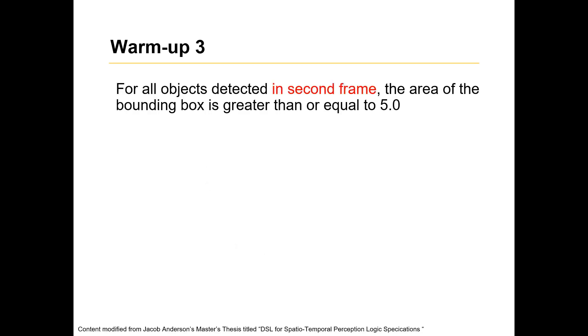And then the third warm-up question is, it's the same as the first one, where we are dealing with areas, and we are dealing with bounding boxes. And now we are just saying that for all objects detected in the second frame particularly, how do we deal, the area of the bounding box is greater than or equal to 5. So now what we have is, if you notice, we need a way to freeze time or a frame, specifically the second frame.